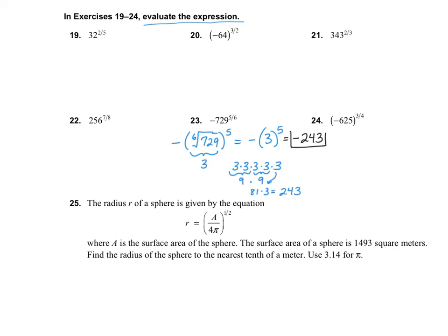Number 24 is the fourth root — this time the negative is part of the exponent because it's inside the parentheses. So it's the fourth root of negative 625, all to the power of 3. Since we have an even index with a negative number inside the radical, we know that this answer is going to be no solution.